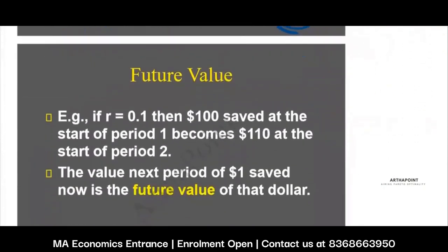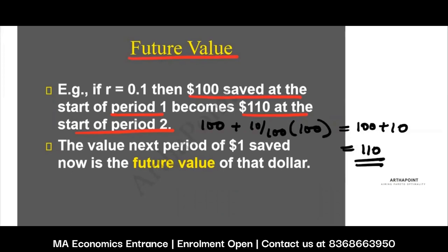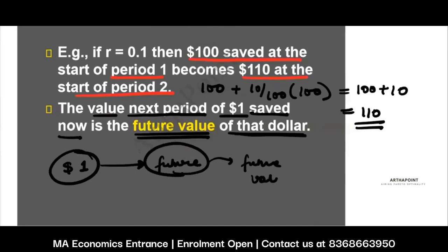Let's go back and define future value. If R = 0.1, then 100 saved at the start of Period 1 becomes 110 at the start of Period 2. You had 100 rupees and you earn 10% interest, so you have 100 + 10 = 110 after one year. The value next period of one dollar saved now is the future value of that dollar. You had one dollar, you saved it for the future, and its value in the future is called the future value.